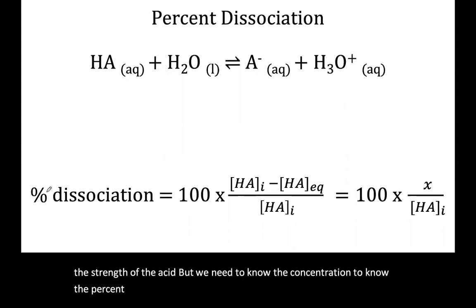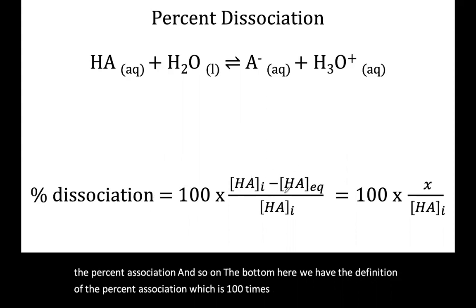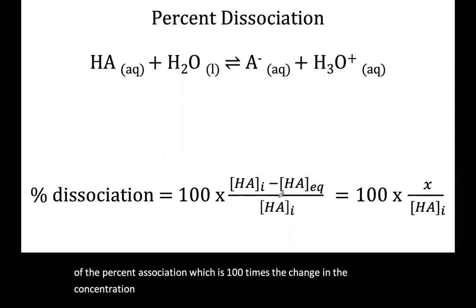On the bottom here, we have the definition of the percent dissociation, which is 100 times the change in the concentration of HA over the initial concentration. And what this is basically telling me is that it's the concentration of deprotonated over the total concentration.